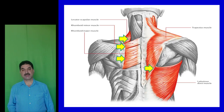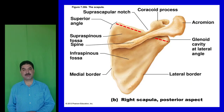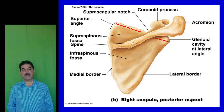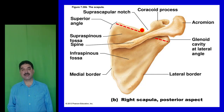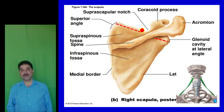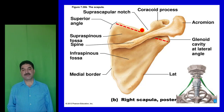The superior border of the scapula lies between the lateral and medial angles. This border is notched, and this notch is called the suprascapular notch. From this notch arises the inferior belly of the omohyoid muscle. The omohyoid has two bellies: the superior belly is attached to the hyoid bone and the inferior belly arises from the suprascapular notch.